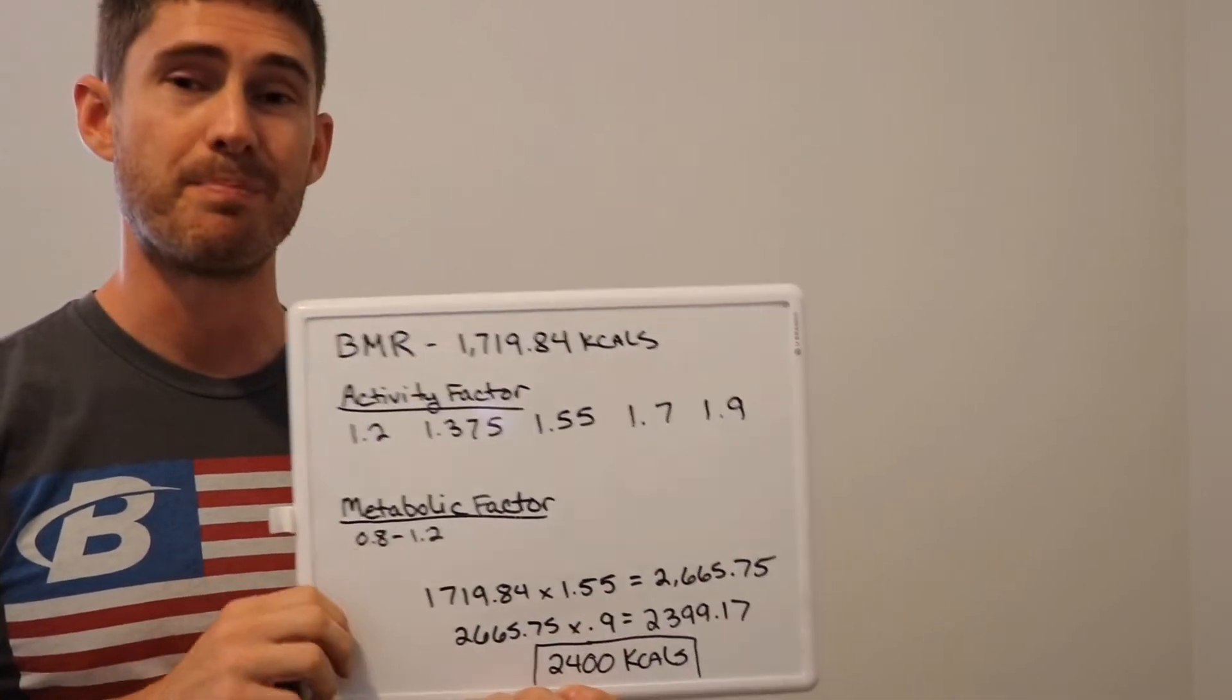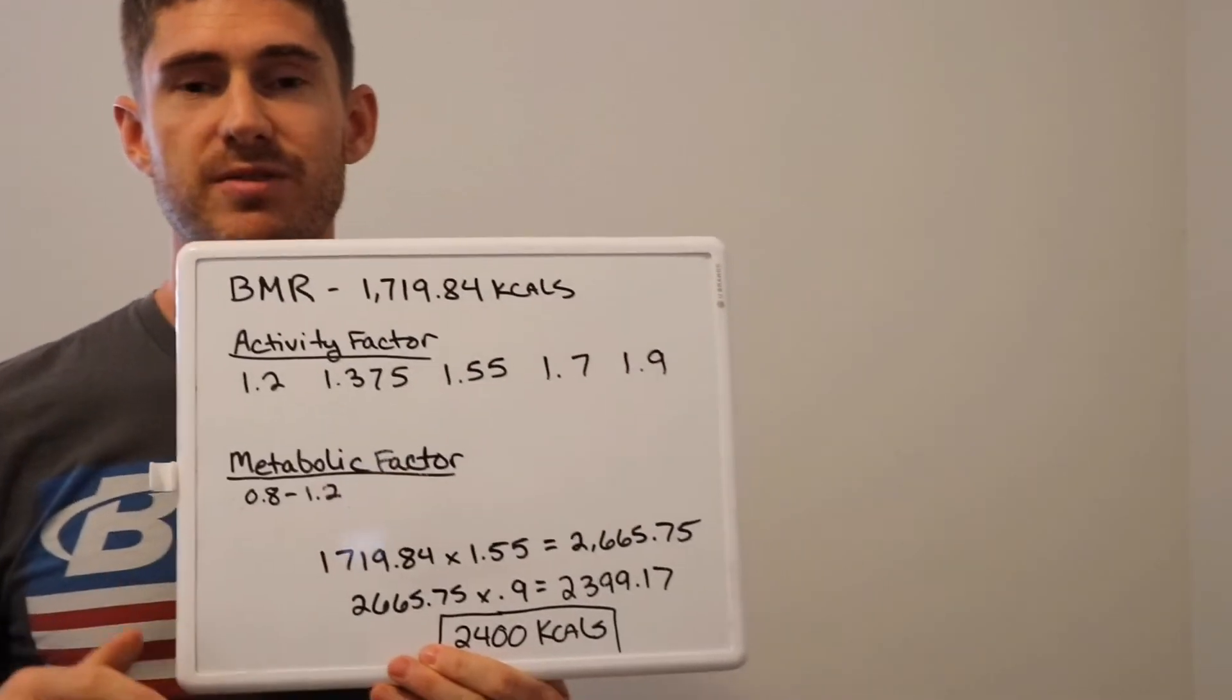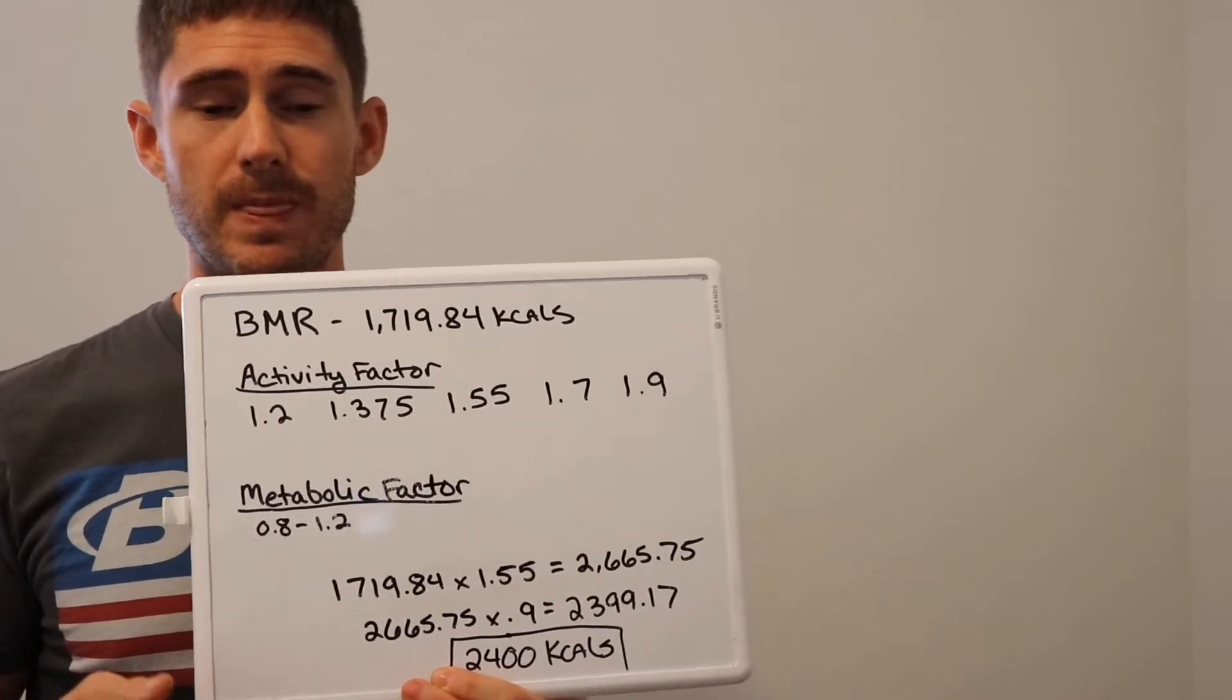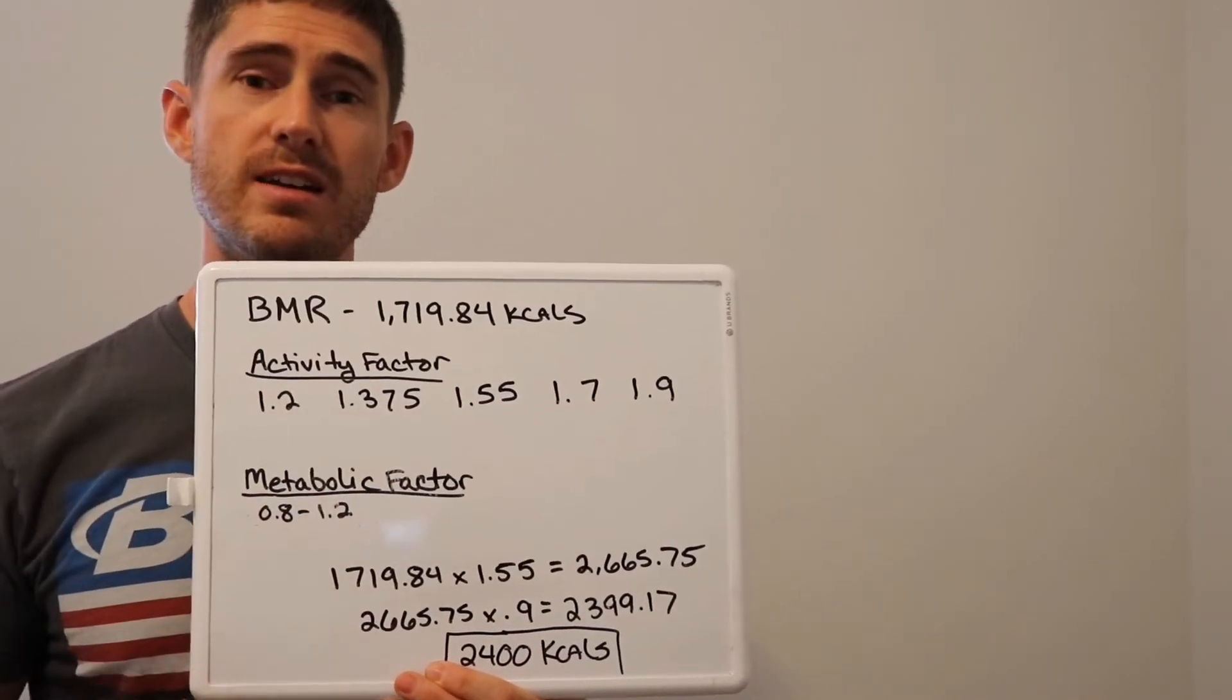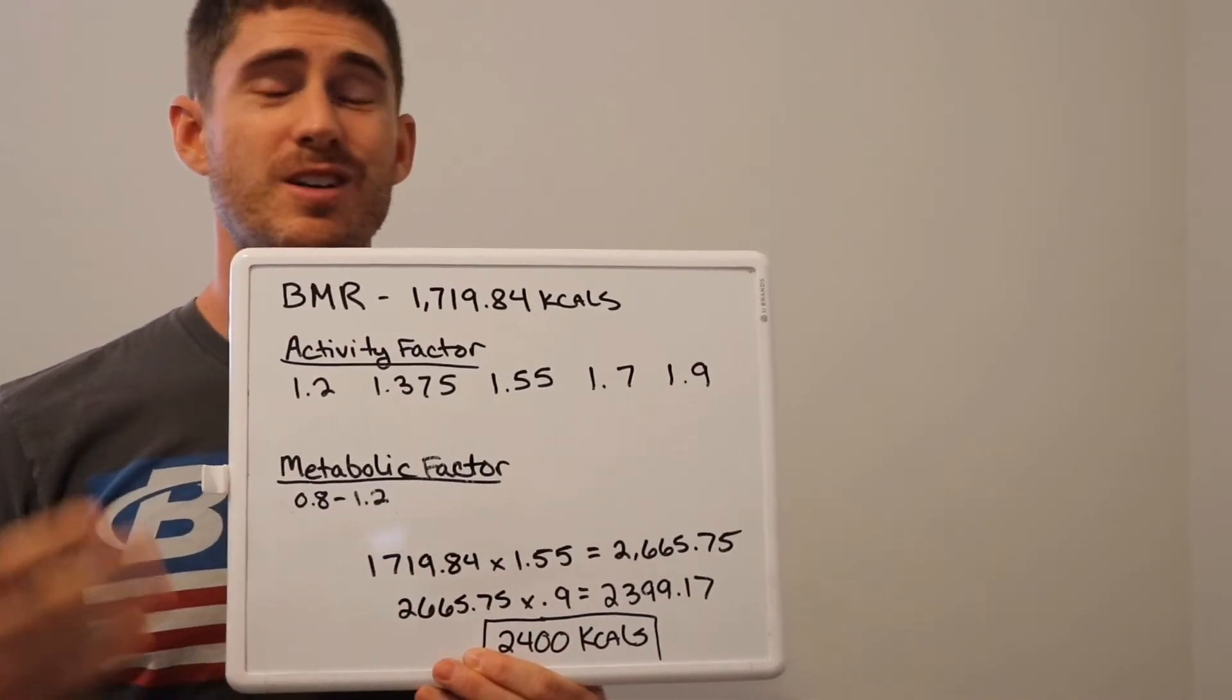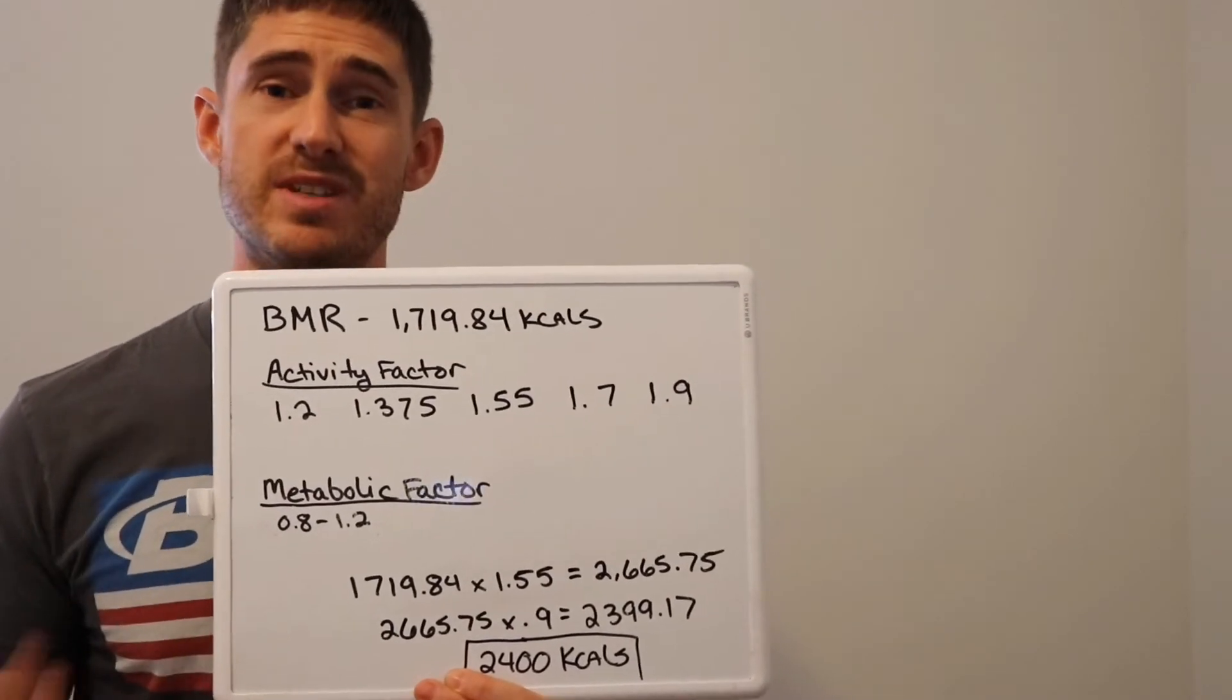We've also got a metabolic factor that we need to take into consideration. A metabolic factor is basically how healthy is your metabolism. If it's down at 0.8, it's on the lower end. Maybe you're experiencing some issues. If you're at a 1.2, you're probably burning through stuff real quick, like you've got a very fast metabolism.